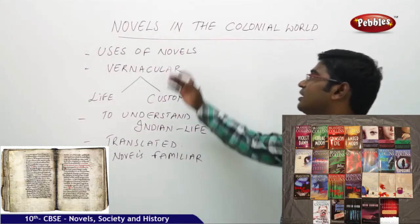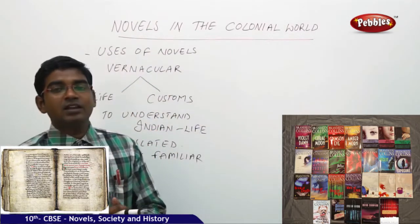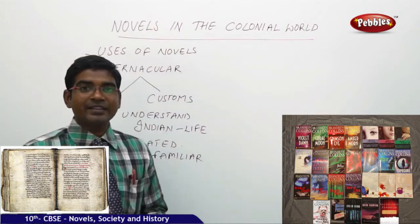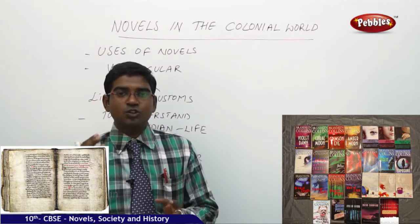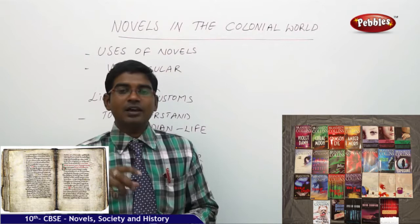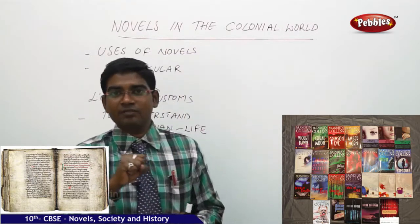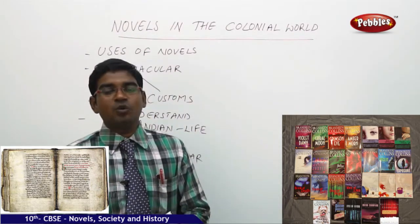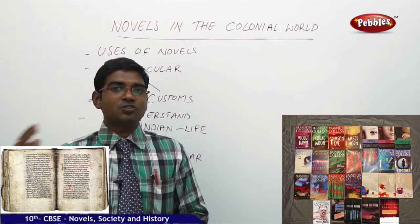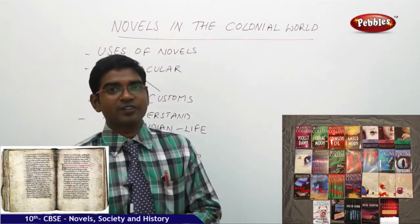Moving on to understand the relationship between the novels and the colonial world — how did novels help people understand Indian basic culture and the Indian understanding of life? As we all know, the Britishers were new to the Indian land. They may have been ruling India, but they didn't know the Indian culture, the habits of Indians, how Indians talked, their customs, the way they dressed and acted. All these things were different compared to their own societies.